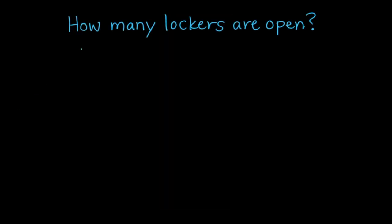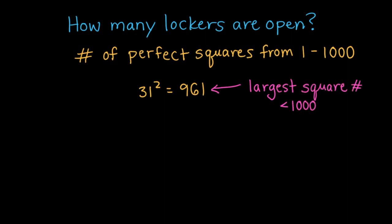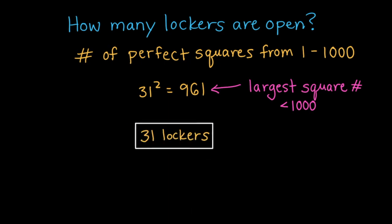For the original problem, we had 1,000 lockers and 1,000 students. So the problem boils down to finding the number of perfect squares from 1 to 1,000. Since 31 squared is 961, all squares up through 31 will also be less than 1,000, and therefore we can conclude that 31 lockers will be open at the end of this strange ceremony.